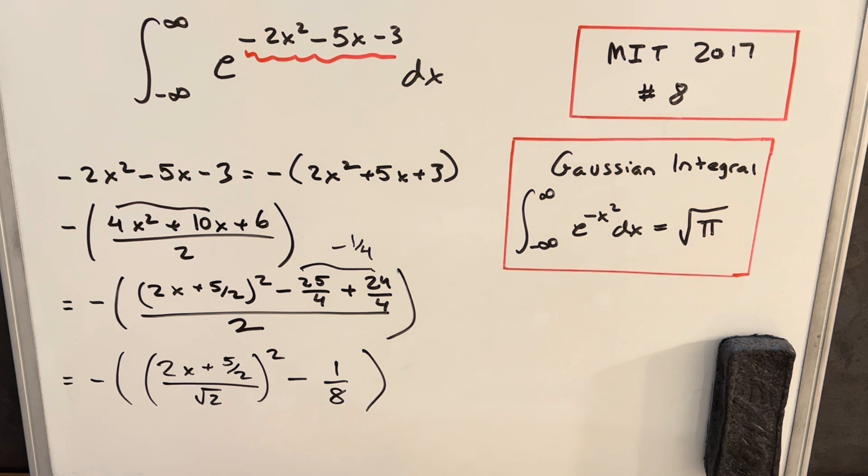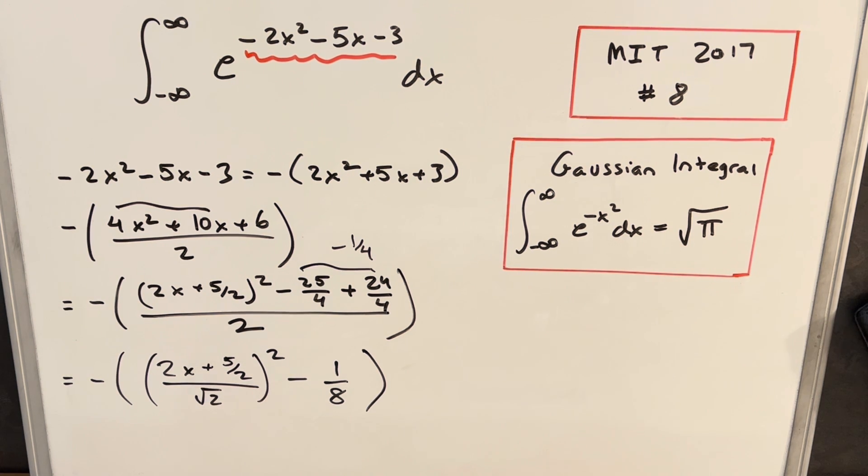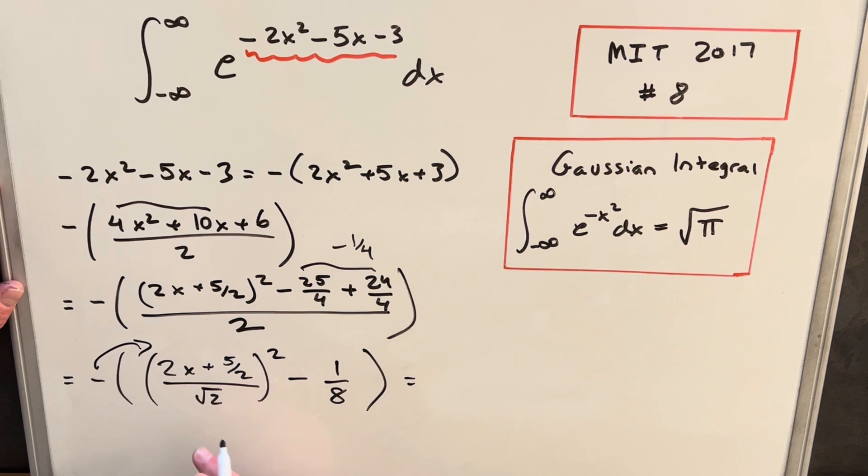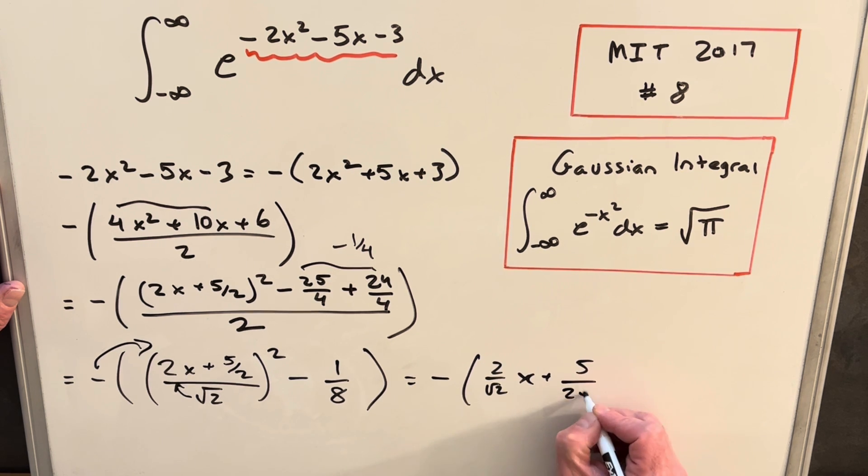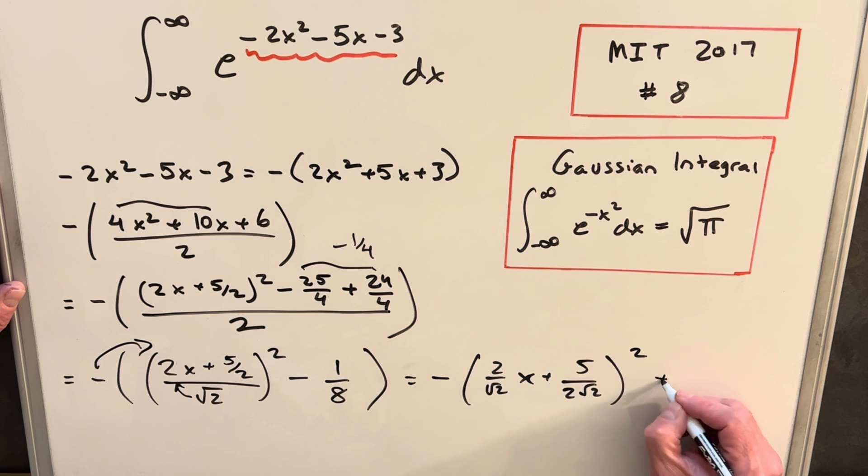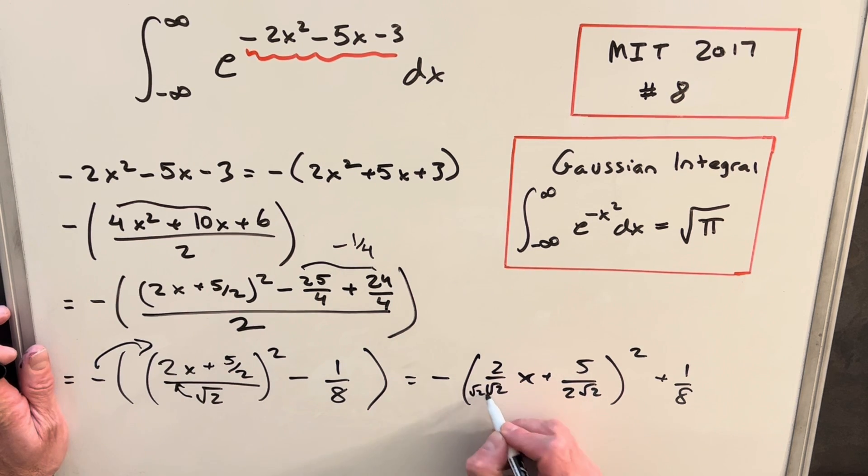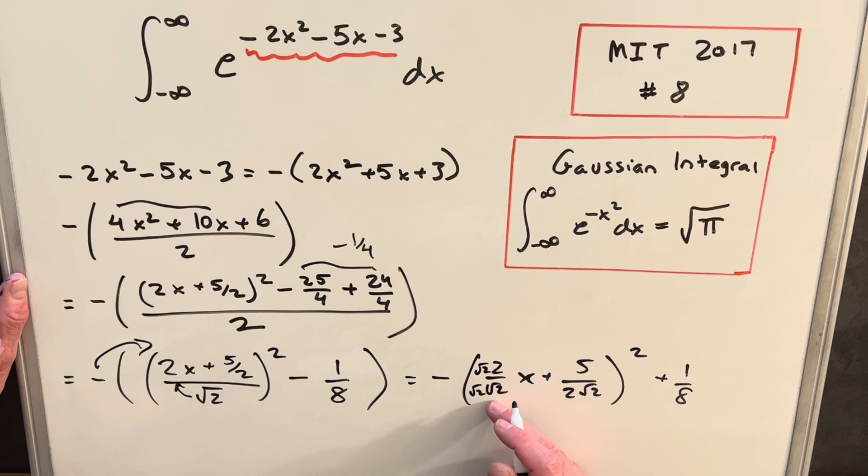Just a lot of messy algebra going on here. So for the next step I'm going to do, we're going to distribute our minus sign. I'm also going to kind of combine this square root of 2 into each term. So let's see how that looks. We're going to have our minus sign. And then I'm going to write this as 2 square root of 2 x plus, we'll have 5 over 2 square root of 2 squared. And then distributing the minus to the minus 1 8, we're going to have plus 1 8. And then one more piece of manipulation here. I think what we'll do, we're just going to bring our square root of 2, rationalize the denominator. A 2 is going to cancel. Okay.